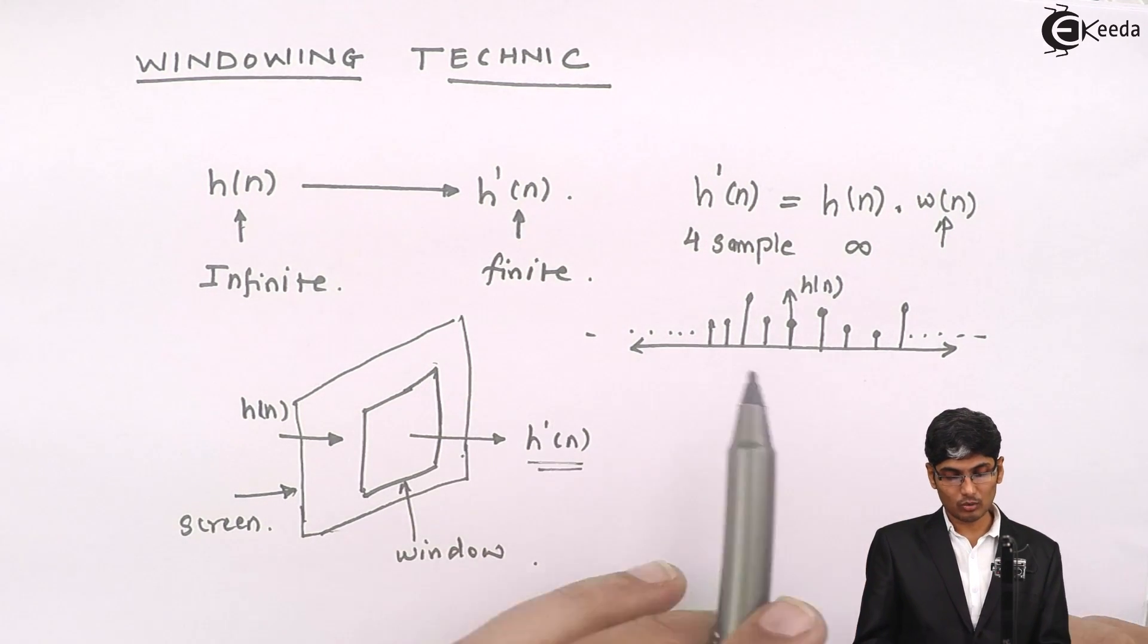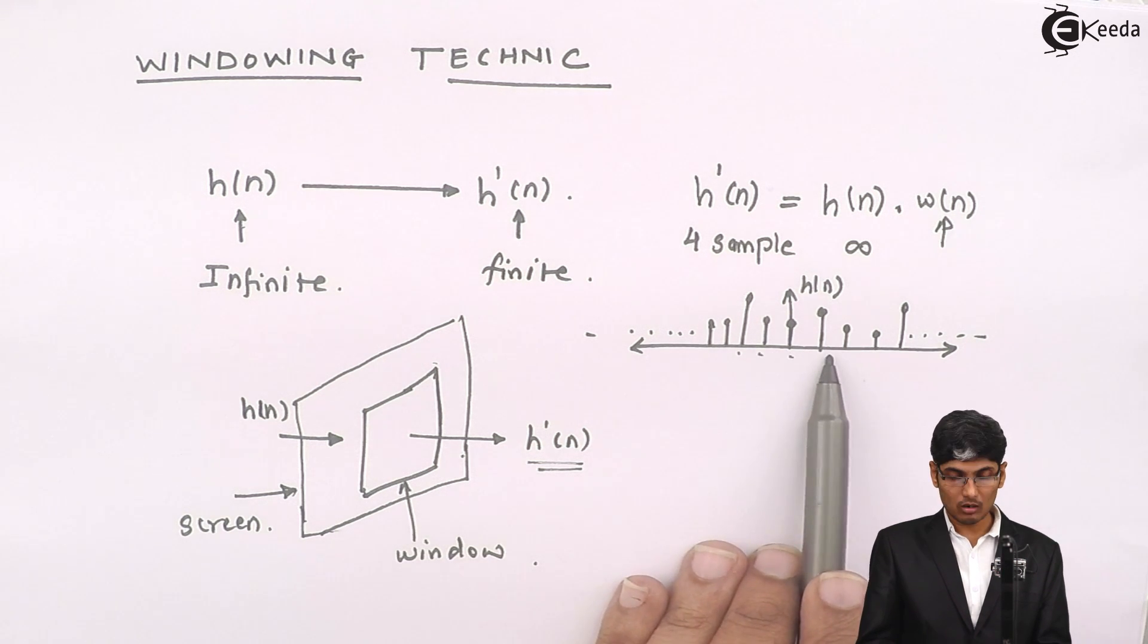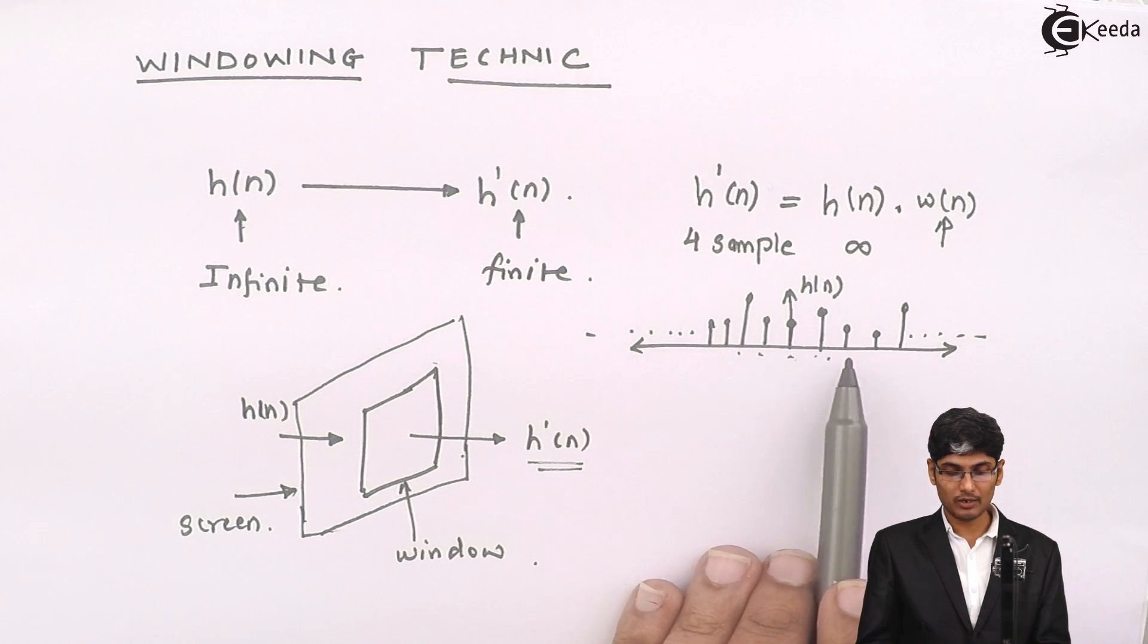Choice is yours whether you want to go 4 like this, 1, 2, 3, 4 or from 0 I will start, 0, 1, 2, 3, 4.